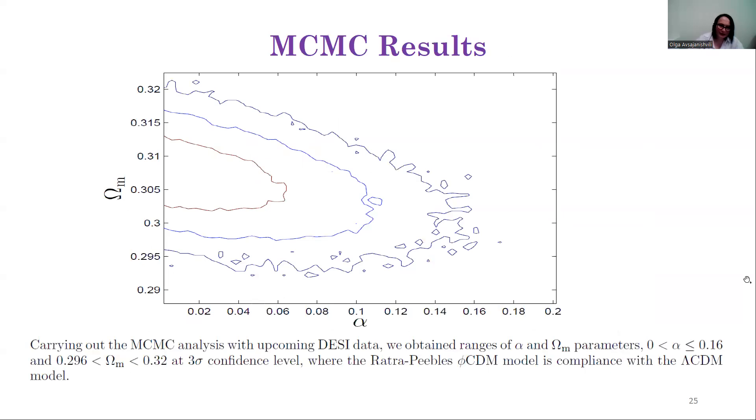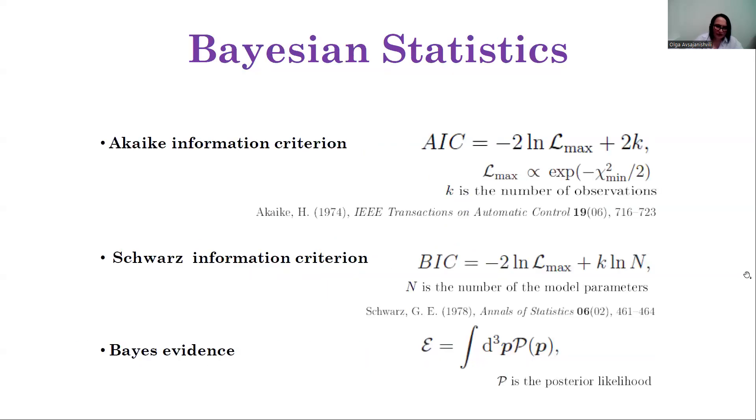Carrying out the MCMC analysis with upcoming DESI data, we obtained ranges of Ωₘ and α parameters at three-sigma confidence level. The Ratra-Peebles φCDM model is in compliance with the ΛCDM model. We applied these posterior ranges to conduct Bayesian statistics. For this aim, we calculated the Akaike and Schwarz information criteria as well as the Bayes evidence.